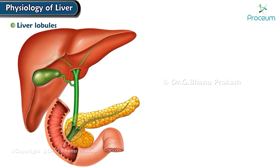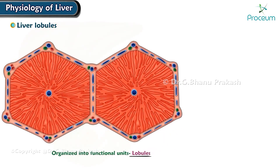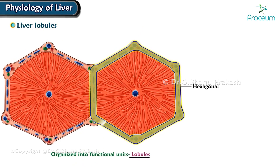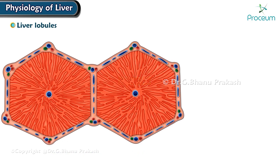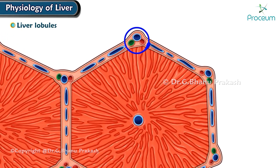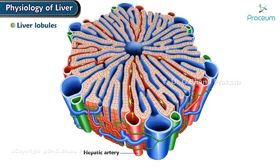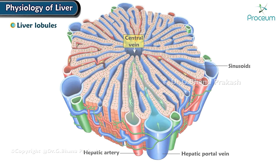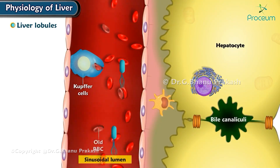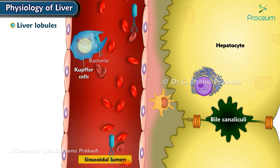Liver Lobules. The liver is organized into functional units known as lobules, which are hexagonal arrangements of tissue surrounding a central vein. At each of the six outer corners of the lobule are three vessels: a branch of the hepatic artery, a branch of the hepatic portal vein, and a bile duct. Blood from both the hepatic artery and the portal vein flows from the periphery of the lobule into large, expanded capillary spaces called sinusoids, which run between rows of liver cells to the central vein like spokes on a bicycle wheel. Kupffer cells line the sinusoids and engulf and destroy old red blood cells and bacteria passing through the blood.